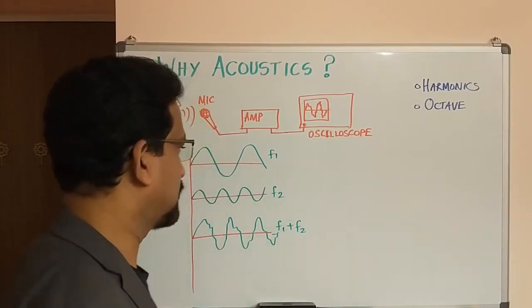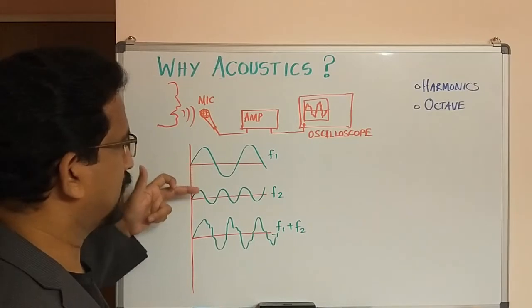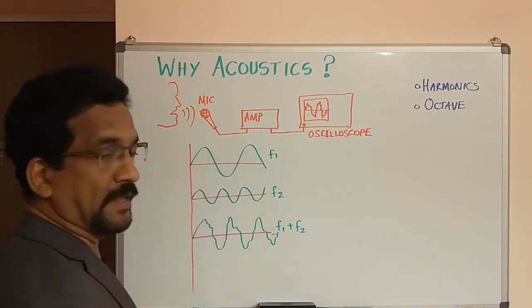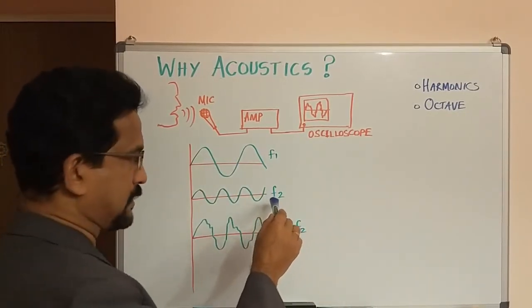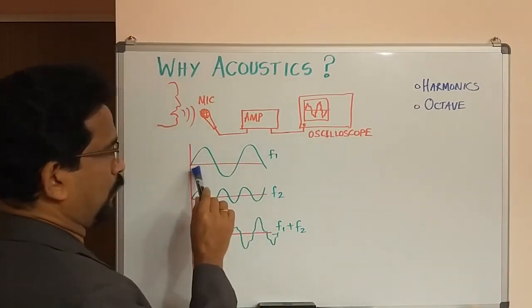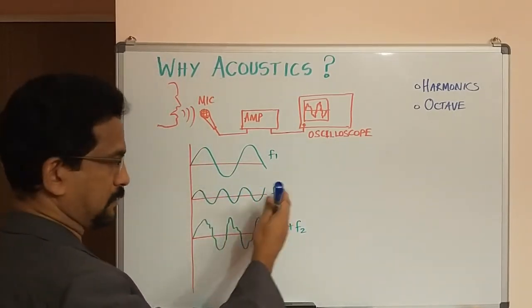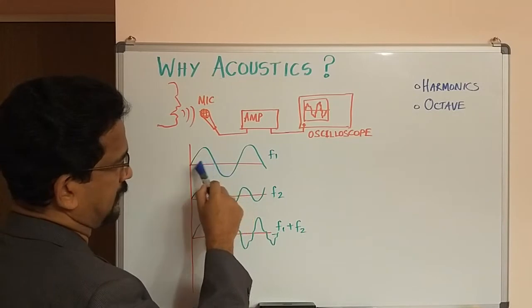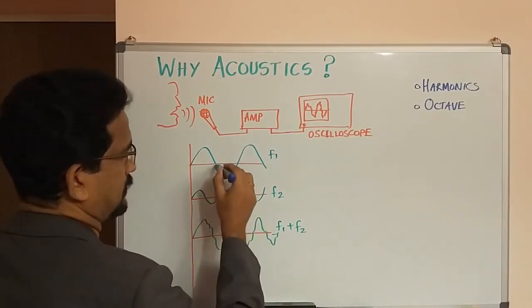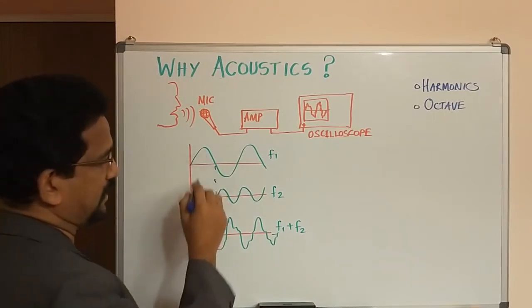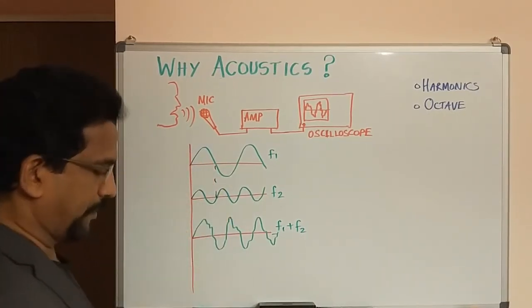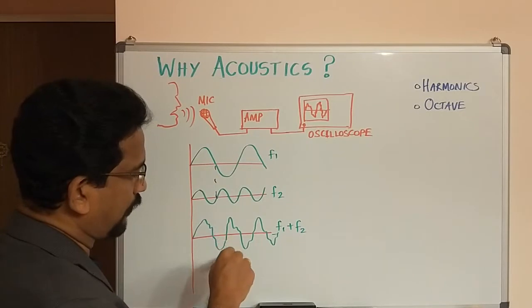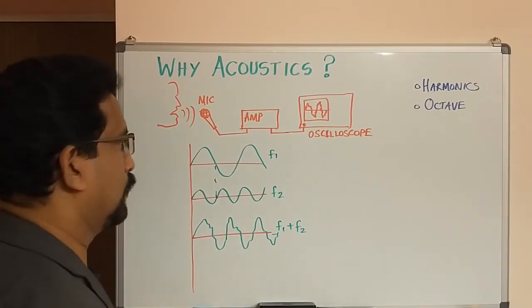Speech as well as music produce very complex waveforms — and that is where harmonics comes in. Here you can see two different curves: one is frequency f1 with a particular amplitude and wavelength, and another frequency f2, which is a higher frequency — more compressed. f2 is double the frequency of f1: when f1 completes half a cycle, f2 completes one complete cycle, and its amplitude is lesser. When you combine these two waveforms, the resulting pattern becomes complex.